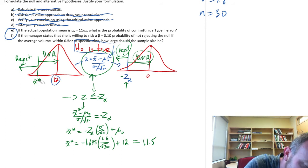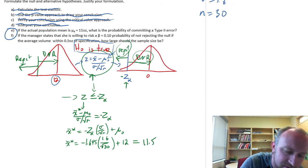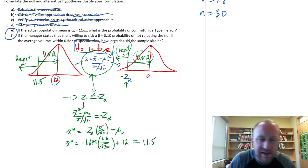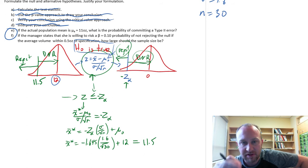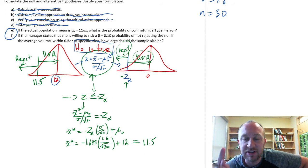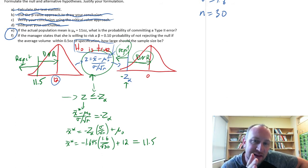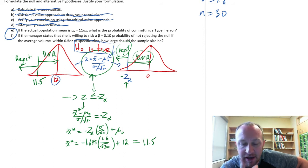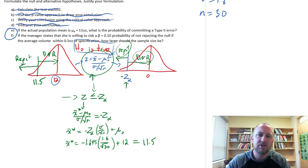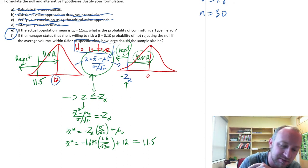So now I know that for any sample I draw with a mean greater than 11.5, that will cause me to not reject the null hypothesis. If I have a sample with a mean less than 11.5, that will give me a test statistic that falls into my rejection space, and I would reject the null hypothesis. That's really the main intermediate calculation we needed to do.